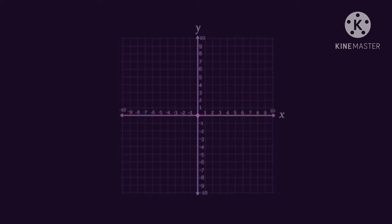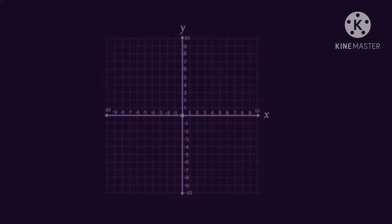So now we know all about how the axes work, let's make use of them. Coordinates are written as two numbers, separated by a comma and with brackets around. The first number is the x-coordinate, and the second number is the y-coordinate.